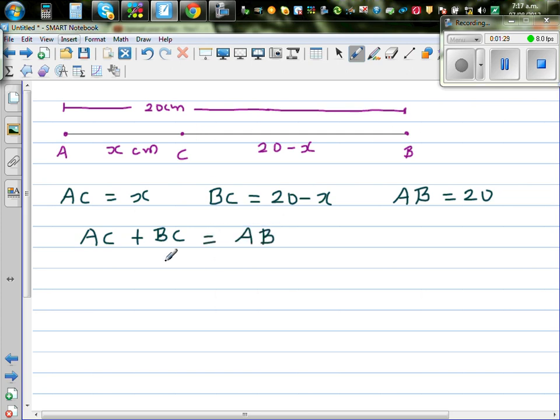So let's substitute. Let's check whether what we have written is right. So AC is x. x plus, what is BC? BC is 20 minus x. And this is equal to AB, which we know is 20. So can you see this is same as writing x minus x plus 20. So this and this gets cancelled. So what we wrote is right. This implies 20 is equal to 20.